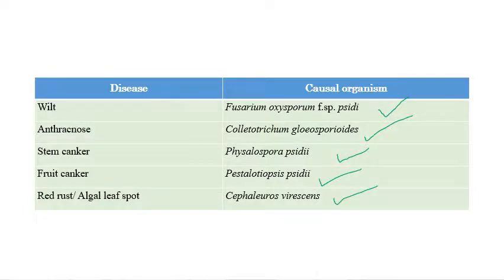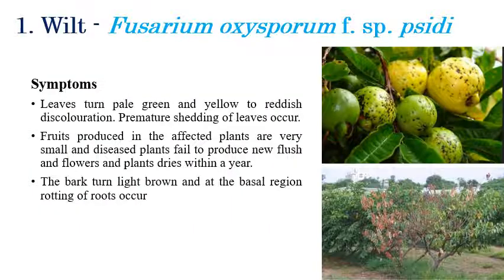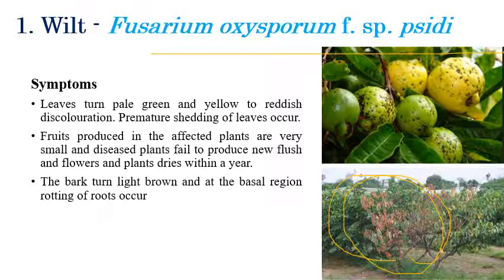Coming to the first disease — wilt, which is caused by Phytophthora sp. The symptoms include wilting of leaves, and we can see reddening. Before wilting, the leaves are converted into pale green or yellow in color. Later the plants are completely wilted, and black color discolorations can be seen on fruits.